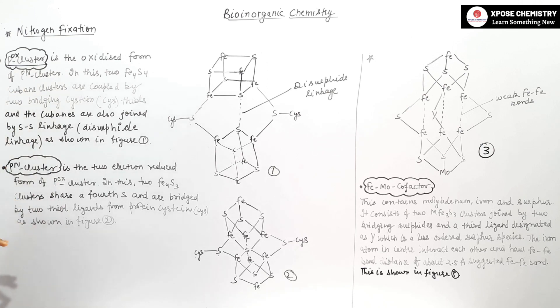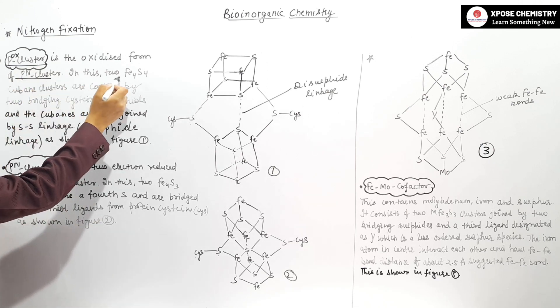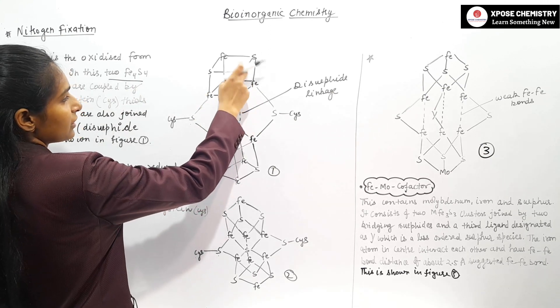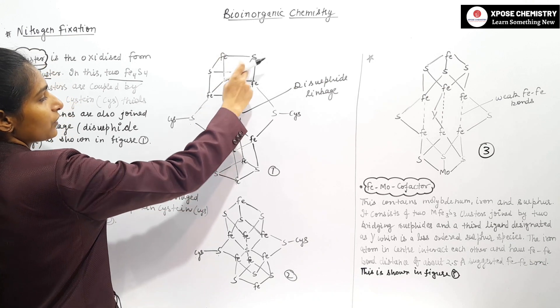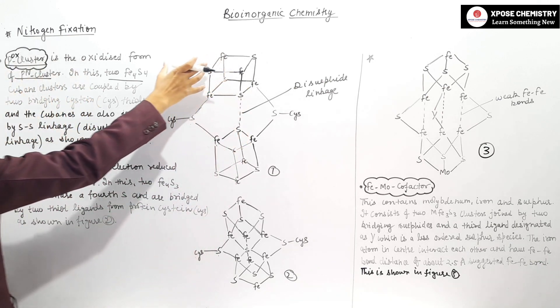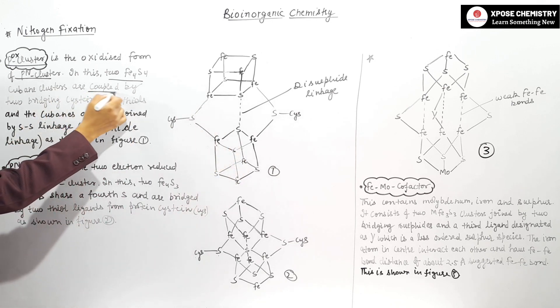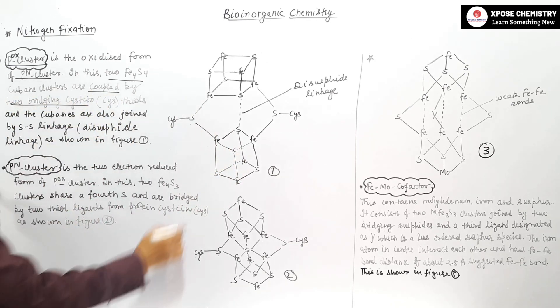P-OX cluster is the oxidized form of P-N cluster. There are 2 Fe4-S4 cubane clusters, with 4 Fe and 4 sulfur atoms. We have 2 cubane clusters.